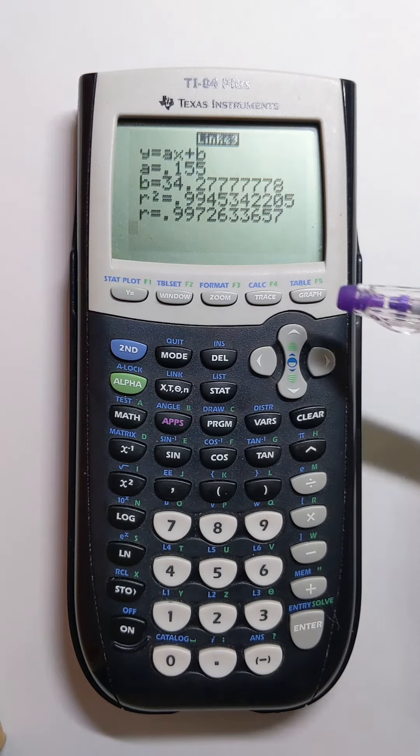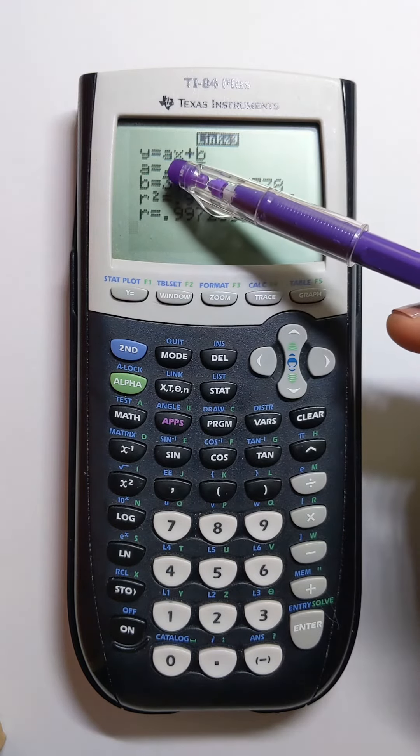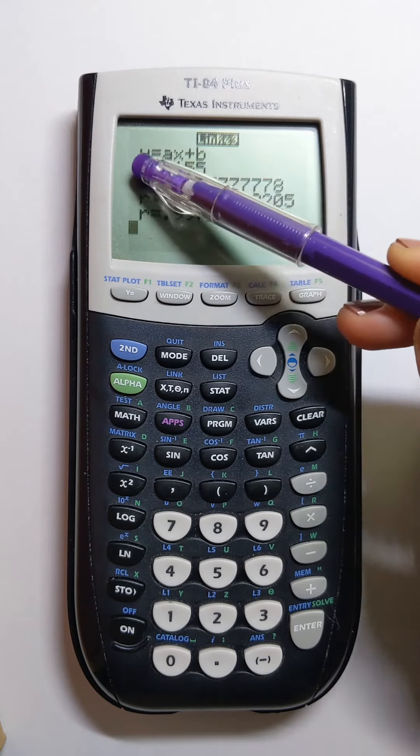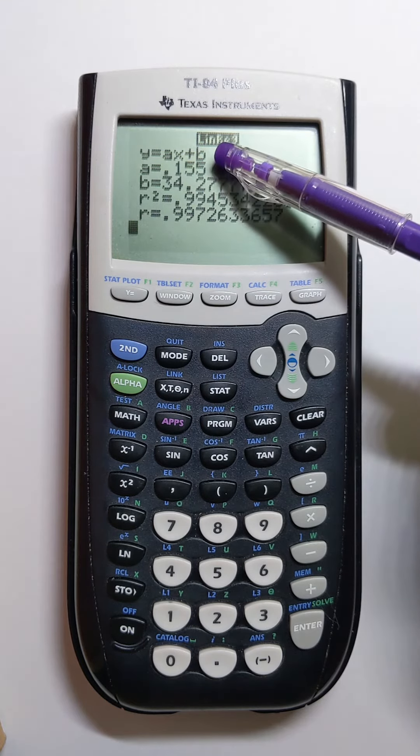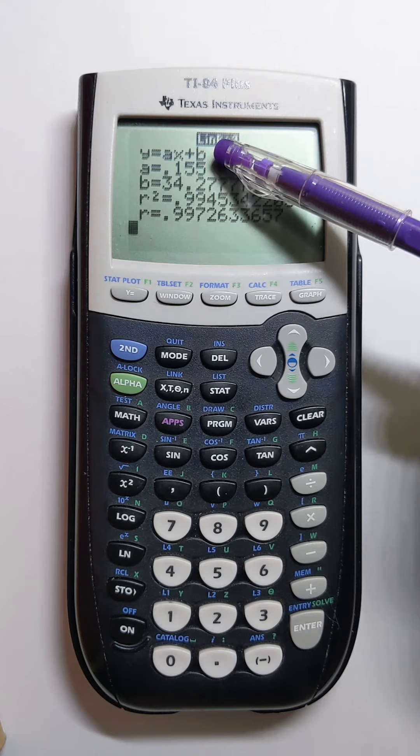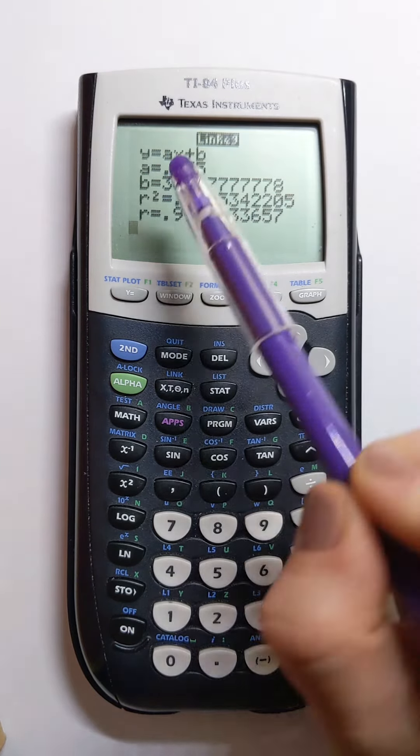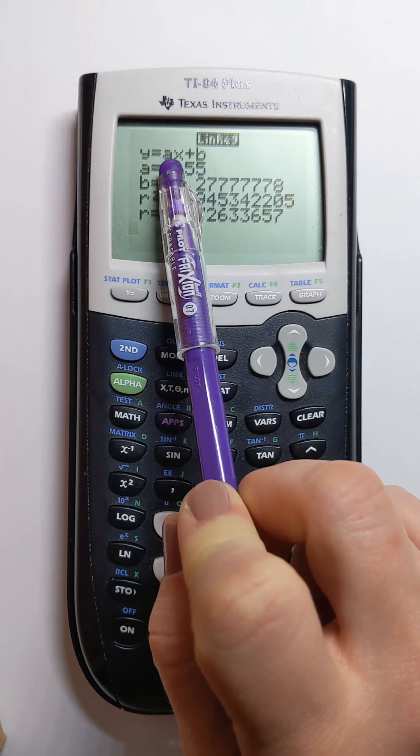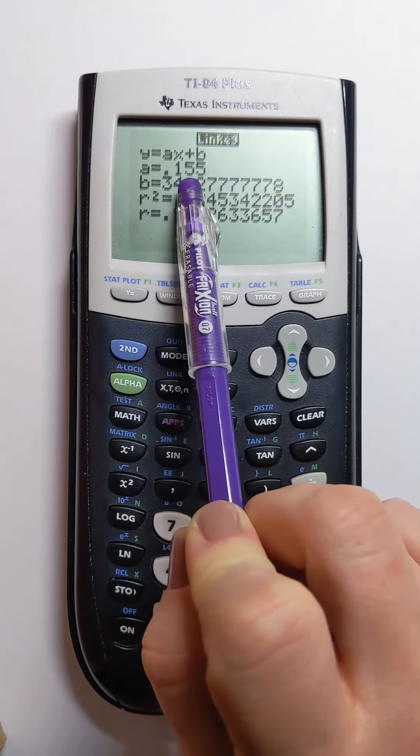So let's look at what it says here. First of all, the first line says y equals ax plus b. Do you recognize the form of a linear equation? So a represents the number in front of x and that's the same as the slope. Well here it is, it's given to us.